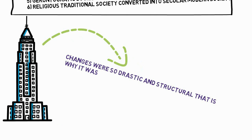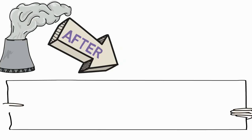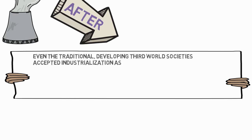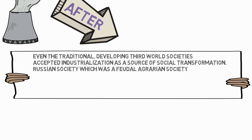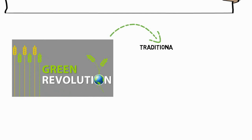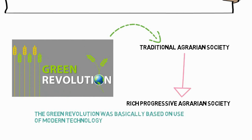After the Industrial Revolution, even traditional developing third-world societies accepted industrialization as a source of social transformation. Russian society, which was a feudal agrarian society, became a modern industrial society just after two five-year plans centered around industry. The Green Revolution in India is an example of how a traditional agrarian society was transformed into a rich, progressive agrarian society, based on modern technology in agriculture, which transformed affected areas socio-economically at a larger level.